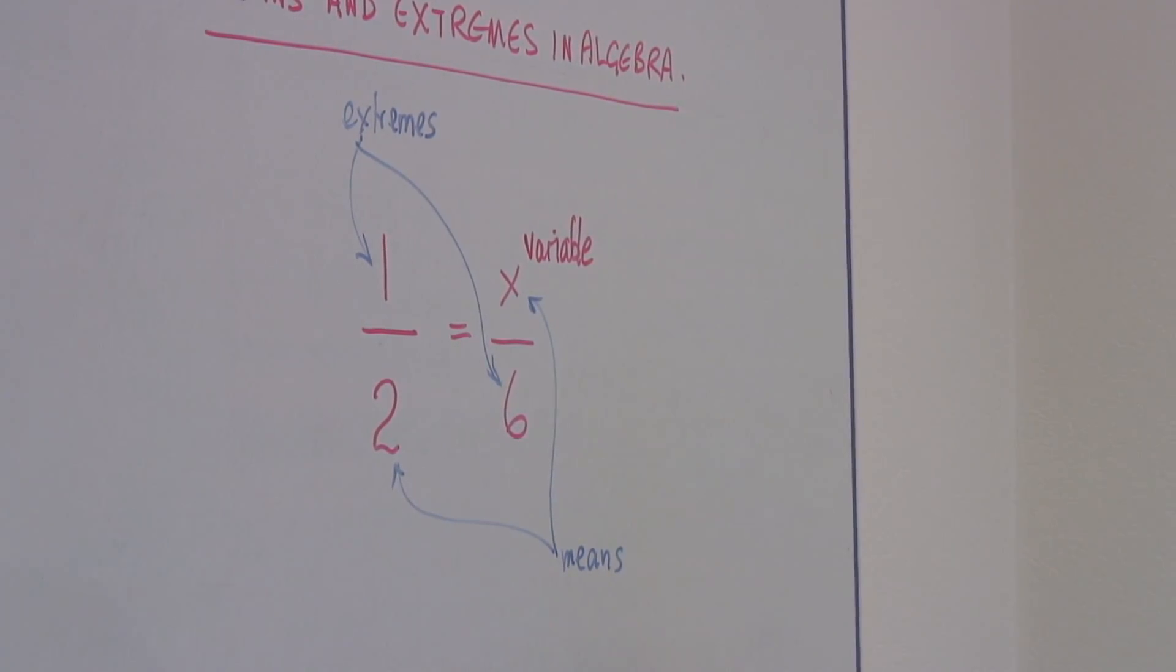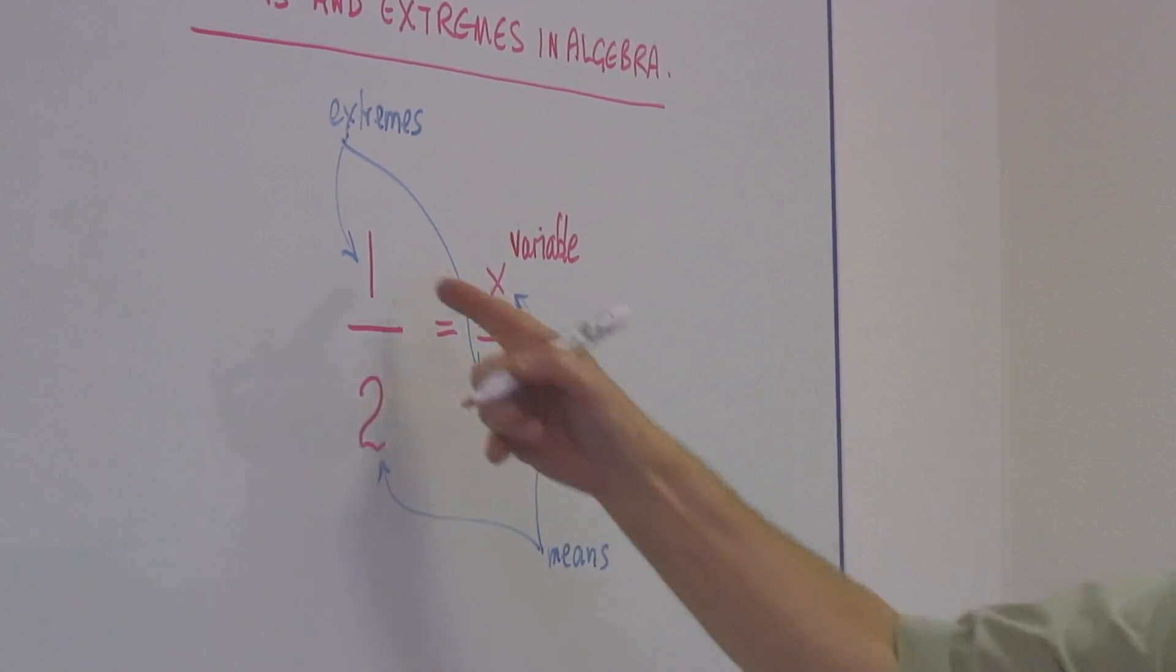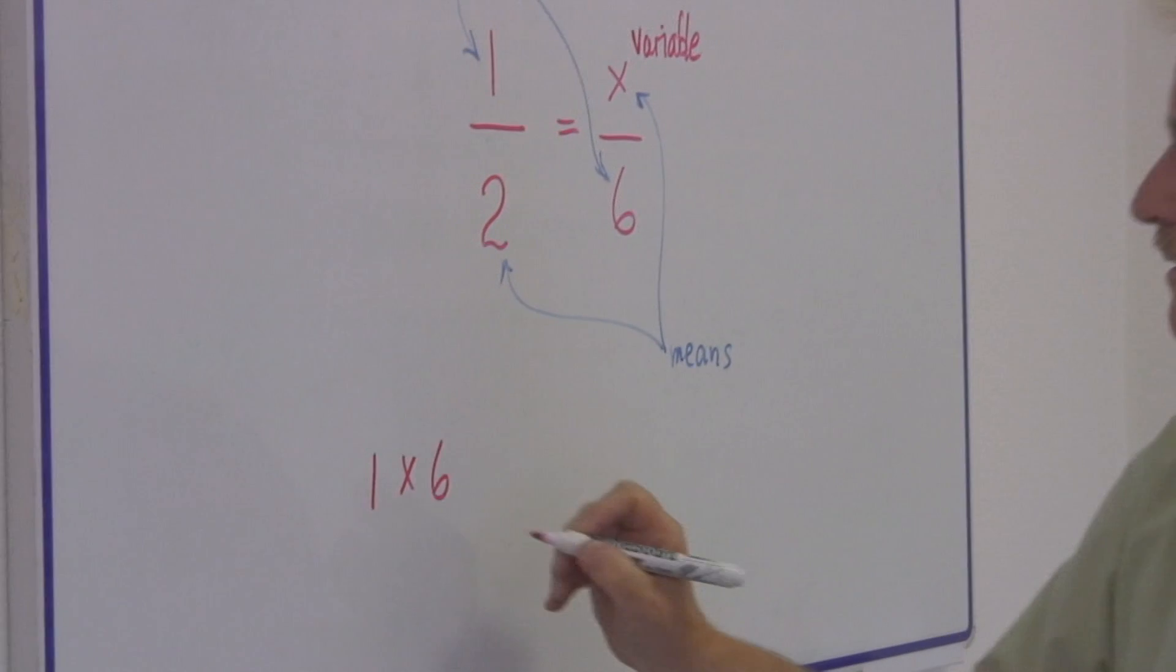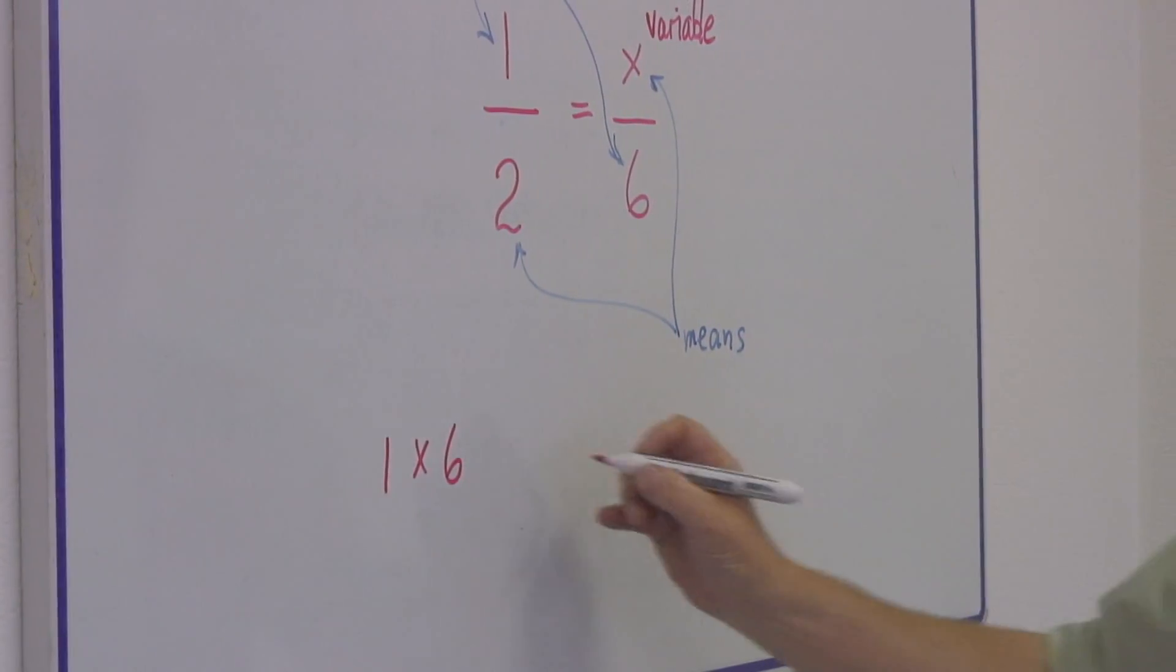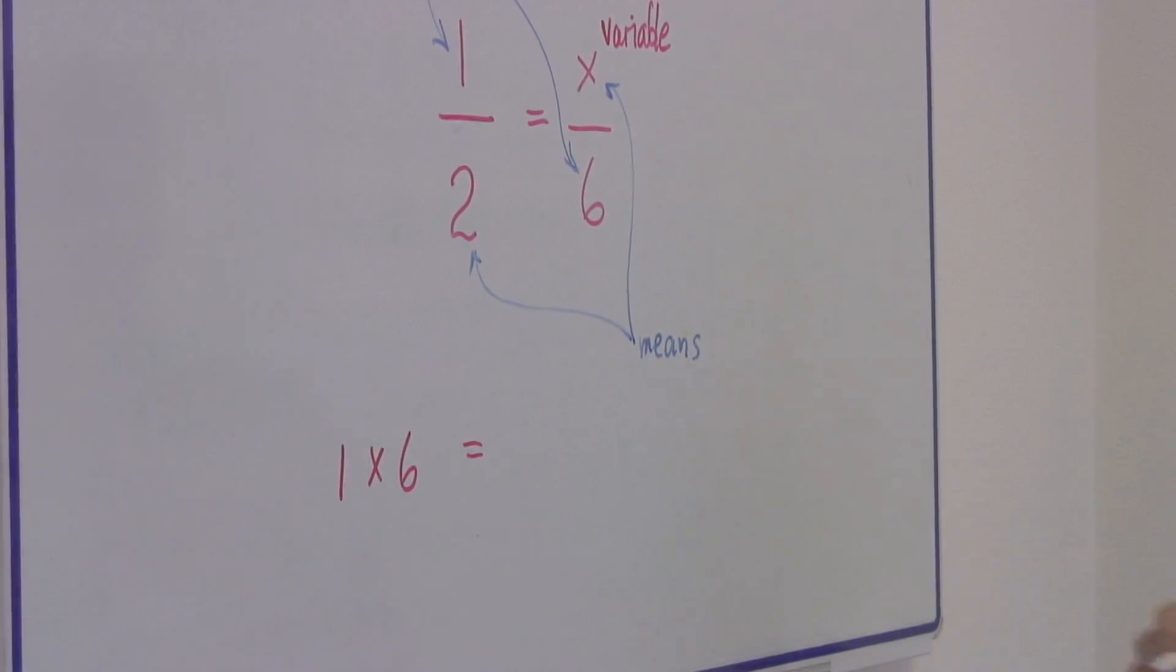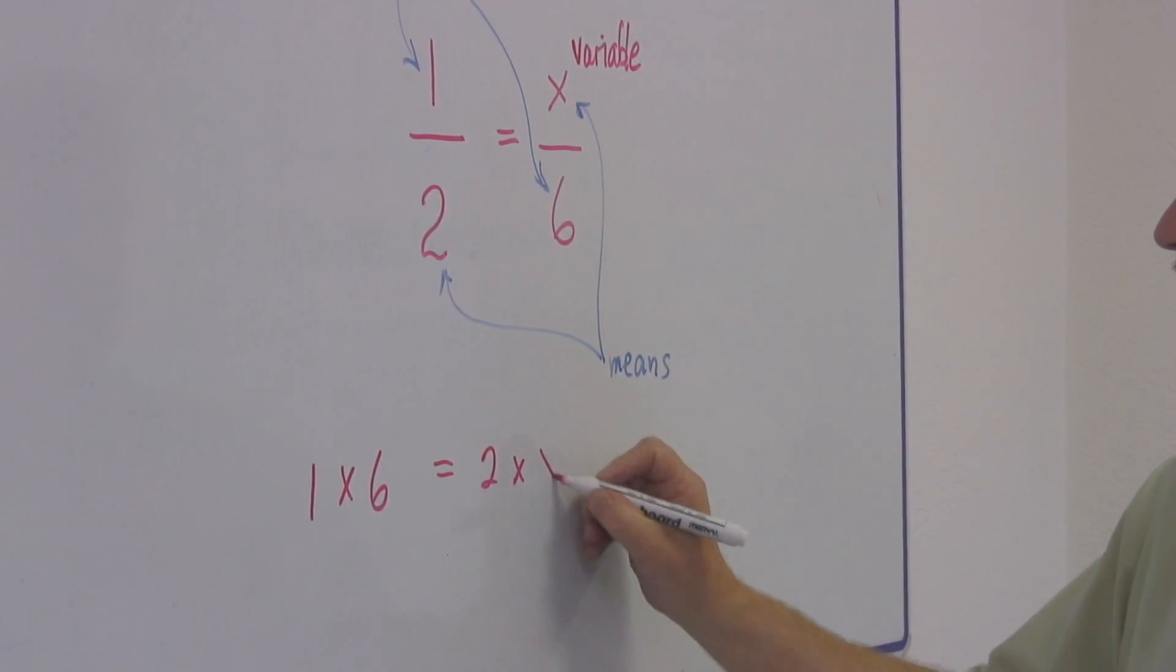If we multiply the extremes together, we will get 6 and 1, so it's 1 times 6. And that is going to be equal to the product of the means, which is 2 times x.